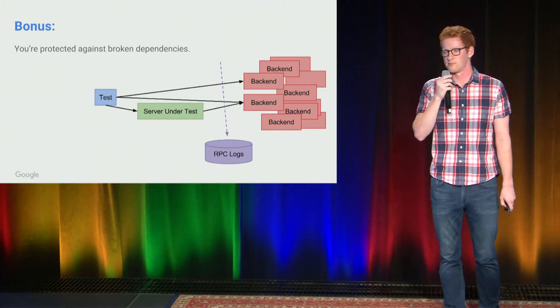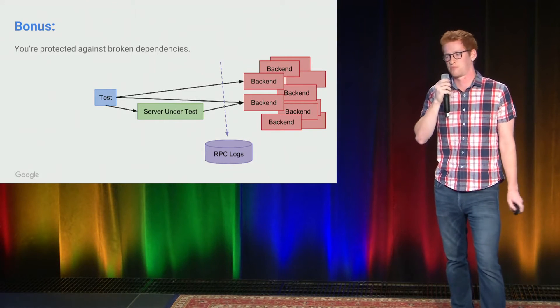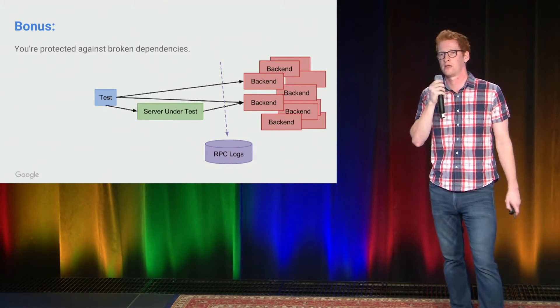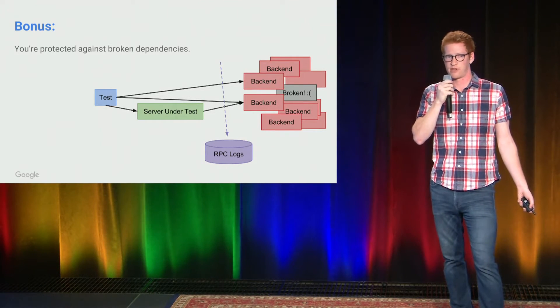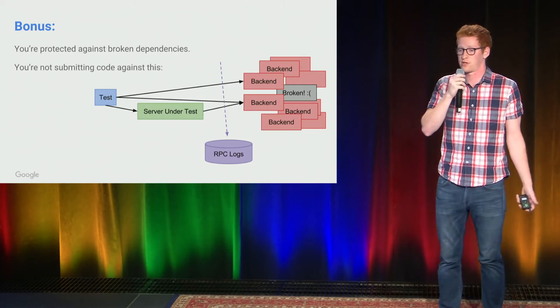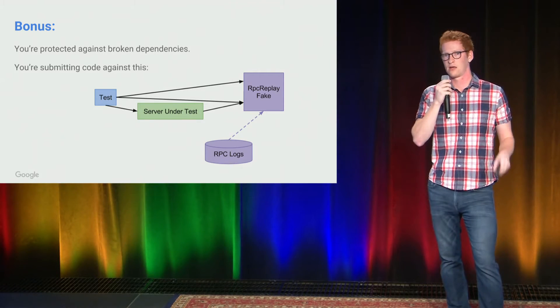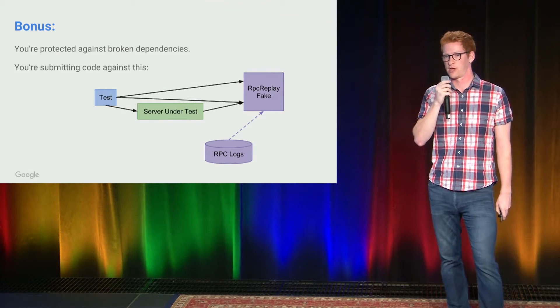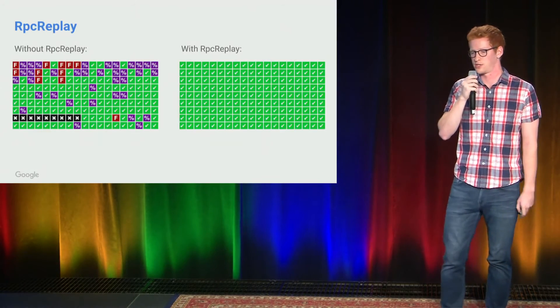Here's a big win for us: as a bonus, you're protected against broken dependencies. A very common case once you have 13 backends — which is more and more common in the microservice world — is that one of your backends is broken. All of a sudden, because you have a dependency on that, your test no longer compiles and none of your developers can work. But you're not actually submitting code against the live backends; you're submitting against the RPC log, which is effectively the last green state all your backends had at the same version number.